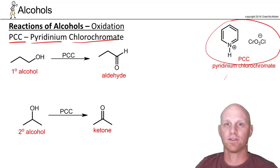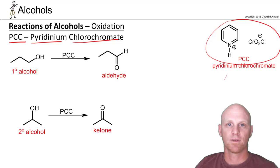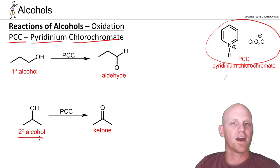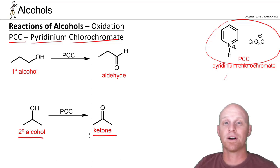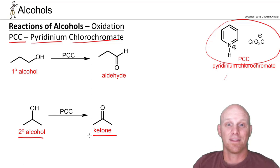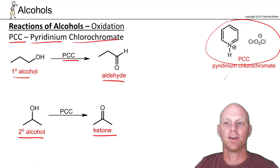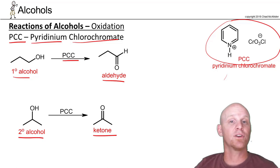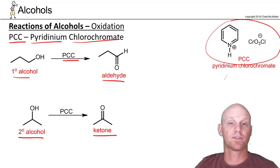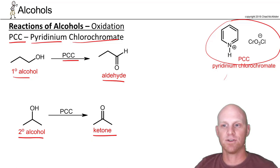PCC is the weaker of the two oxidizing agents — weaker than chromic acid. It will oxidize primary or secondary alcohols, but only one step each. For a secondary alcohol, only one step of oxidation is possible anyway, so you get a ketone. For secondary alcohols it doesn't matter if you use PCC or chromic acid — either reagent gives you a ketone. It's the primary alcohol where you see the difference: with PCC, it stops at the aldehyde. PCC doesn't react with aldehydes, so once you form the aldehyde, you're done — you will not proceed to the carboxylic acid. If your goal is to turn a primary alcohol into an aldehyde, PCC is what you use; if you want a carboxylic acid, chromic acid is what you use.